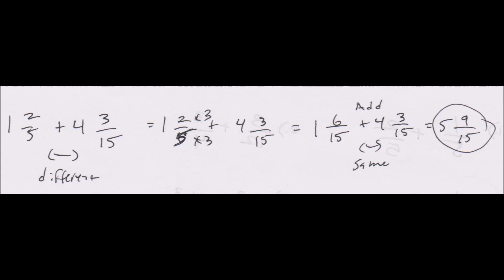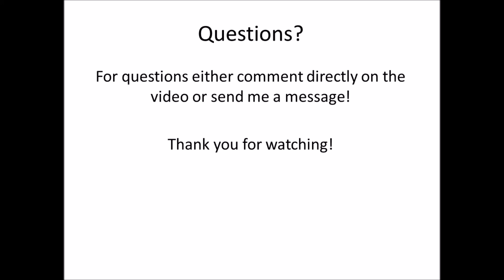Then you just add: one plus four is five for the whole numbers, and six plus three is nine for the numerators, over fifteen. The denominator always stays the same, so you get five and nine-fifteenths. You can reduce nine-fifteenths by dividing by three to get three-fifths, so the final answer is five and three-fifths.